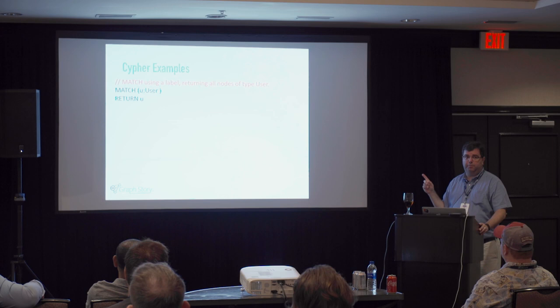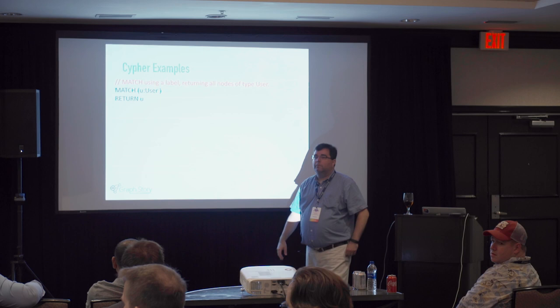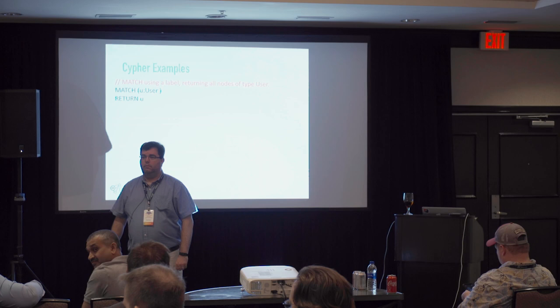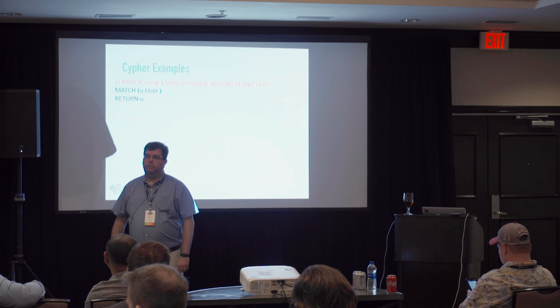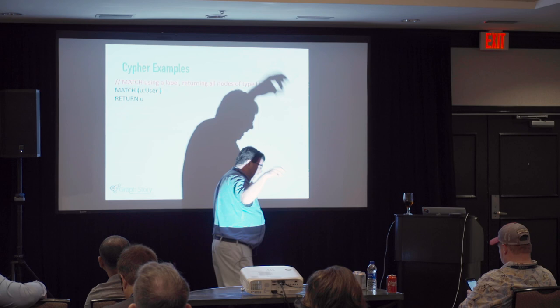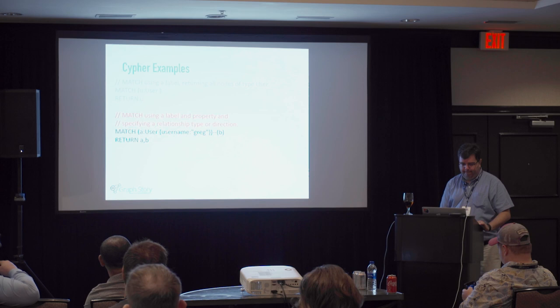You can match on a label — this returns all users. If you ran this on Facebook, you'd break Facebook because you're returning every single user — so limits and skips are going to help. You can do a count on relationships to weight how many a user has. You can also put value into a relationship and store it as you move forward, then query it out as a property.